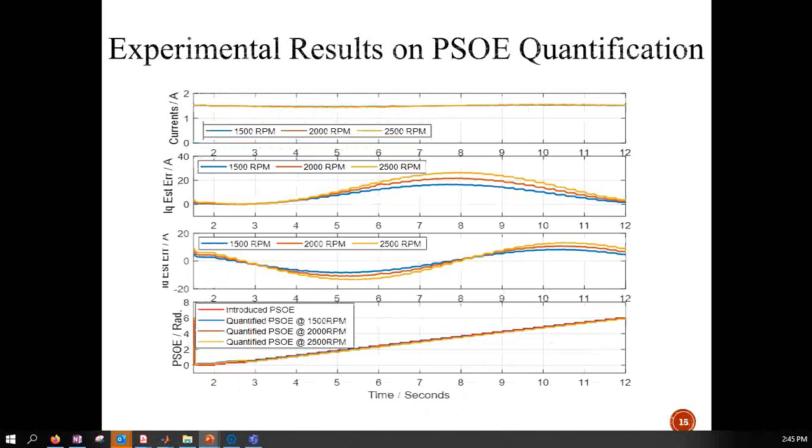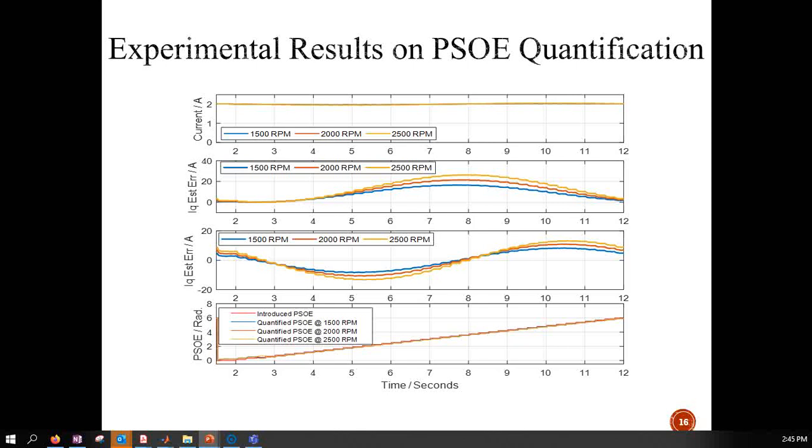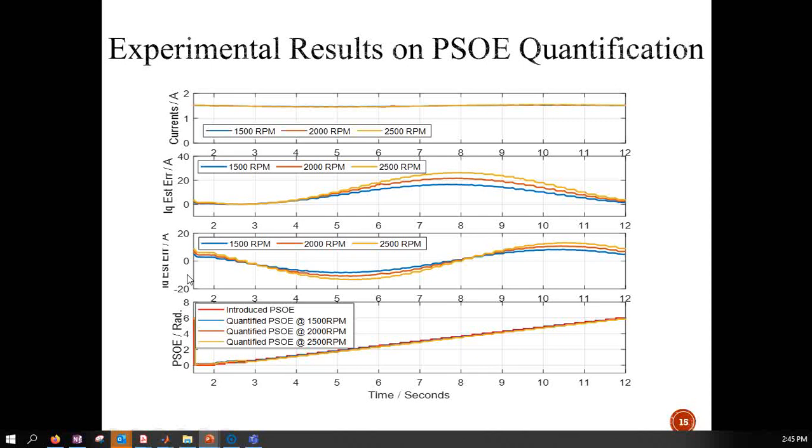At 2 amperes, it is following as we expected. The i_d error and i_q error are shown, and this is the computed position sensor offset error based on those measured error values.